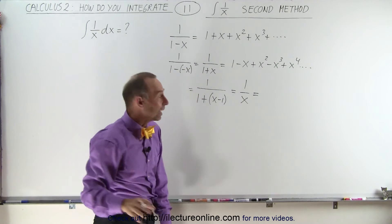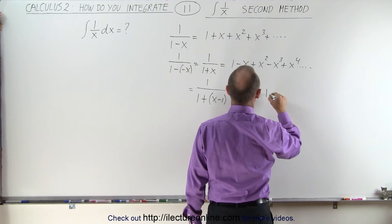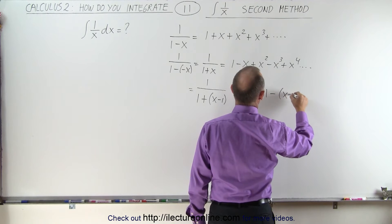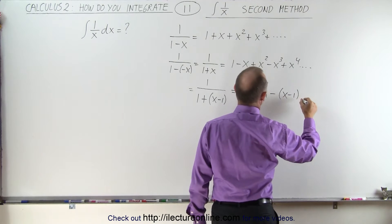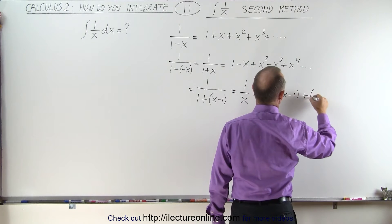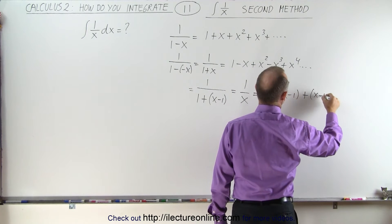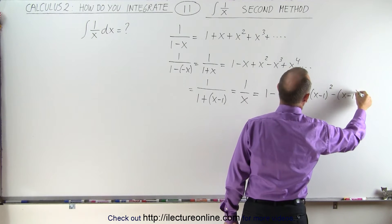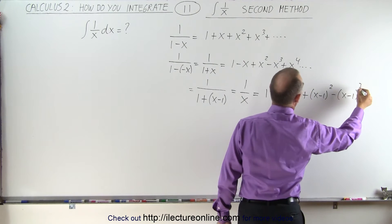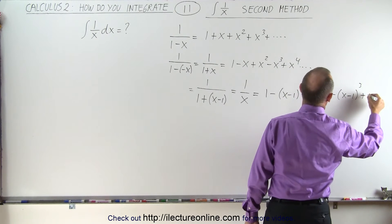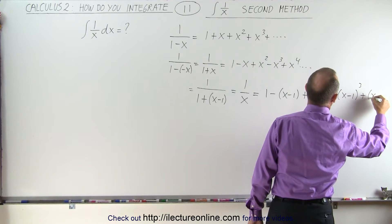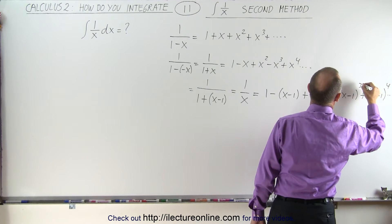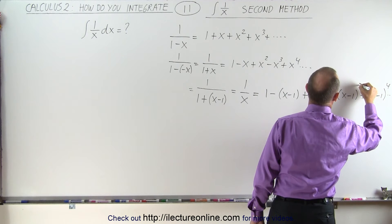And 1 over x will then equal this series with every x replaced by x minus 1. So we get 1 minus (x minus 1) plus (x minus 1) squared minus (x minus 1) cubed plus (x minus 1) to the fourth power, and so forth.